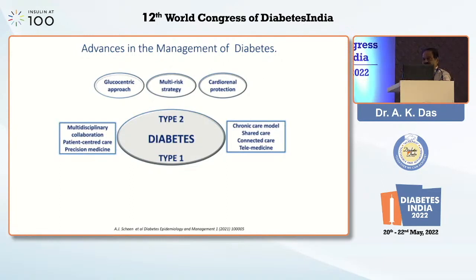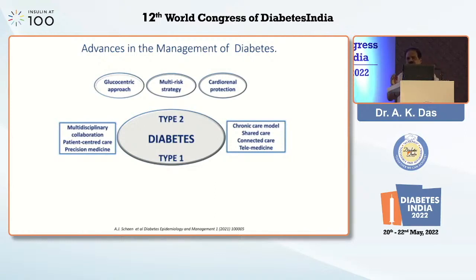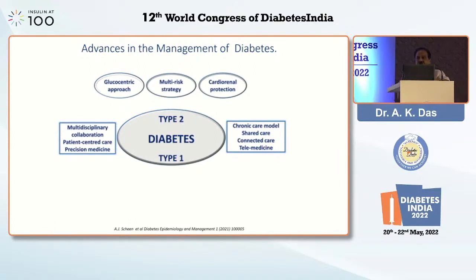Number two is what our president said in the beginning: towards a multi-disciplinary collaborative patient-centered approach. Multi-disciplinary collaborative patient-centered care — and the last one is precision medicine. Today we are moving towards precision medicine. We are also going to take care of what we call a chronic care model, which includes shared care, connected care, and telemedicine care.